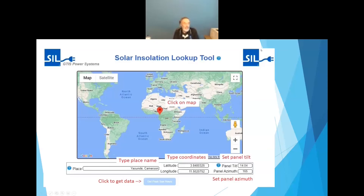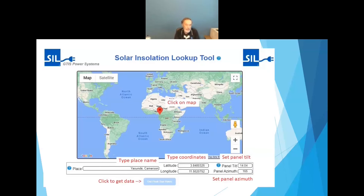The front end looks like this. You've got a Google Map that you can click on to get your coordinates, or you can type in the name of the place using the Google Places API, and that'll bring in your coordinates. You can set the panel tilt — there's a drop-down box that allows you to select typical roof pitches. The one here for Yaoundé in Cameroon is a 3-and-12-pitch roof at 14 degrees, with panels tilted slightly to the east at 165 degrees.